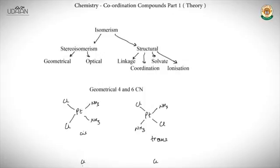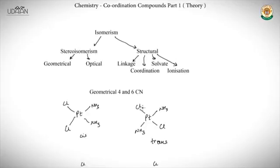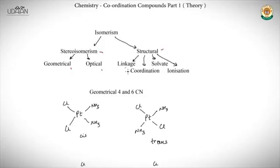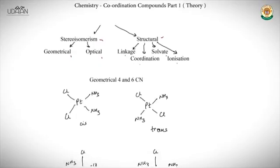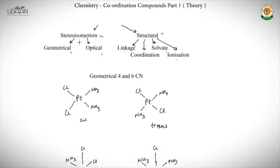The next important concept is isomerism. Isomerism is where the same molecular formula gives two or more different structures. There are two types: stereoisomerism (divided into geometrical and optical) and structural isomerism (divided into linkage, coordination, solvate, and ionization isomerism).